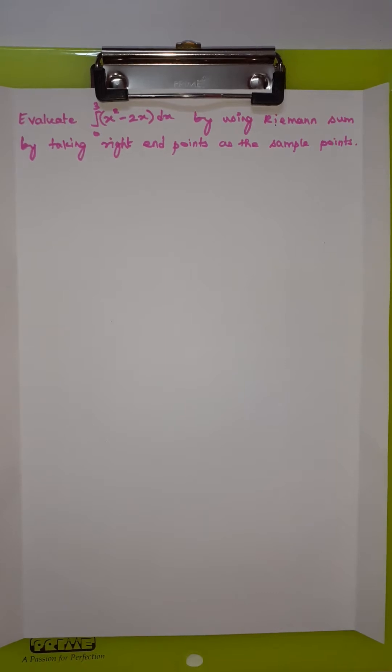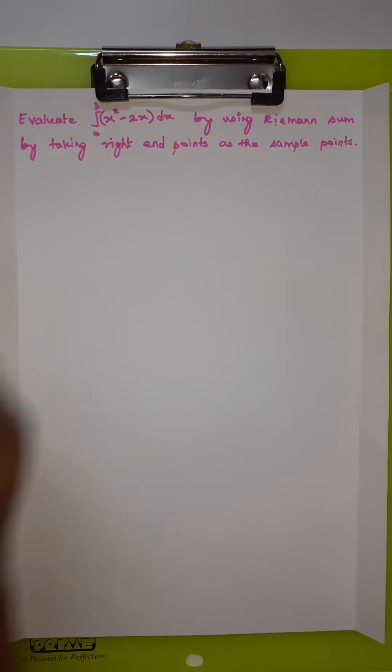Hello friends, welcome to Muromax. Today in integral calculus we are going to learn how to find the Riemann sum. The question is: evaluate the integral from 0 to 3 of (x² - 2x) dx by using the Riemann sum, taking right end points as the sample points.